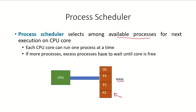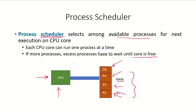If this is the RAM and there are three processes P1, P2, and P3 currently waiting for the CPU, and the operating system is also available as part of the RAM, then the scheduler — which is a core component of the operating system — will choose amongst these waiting processes and assign the CPU to one of them. One CPU core can run only one process at a time, so if there are more processes, each will have to wait until the core is free.